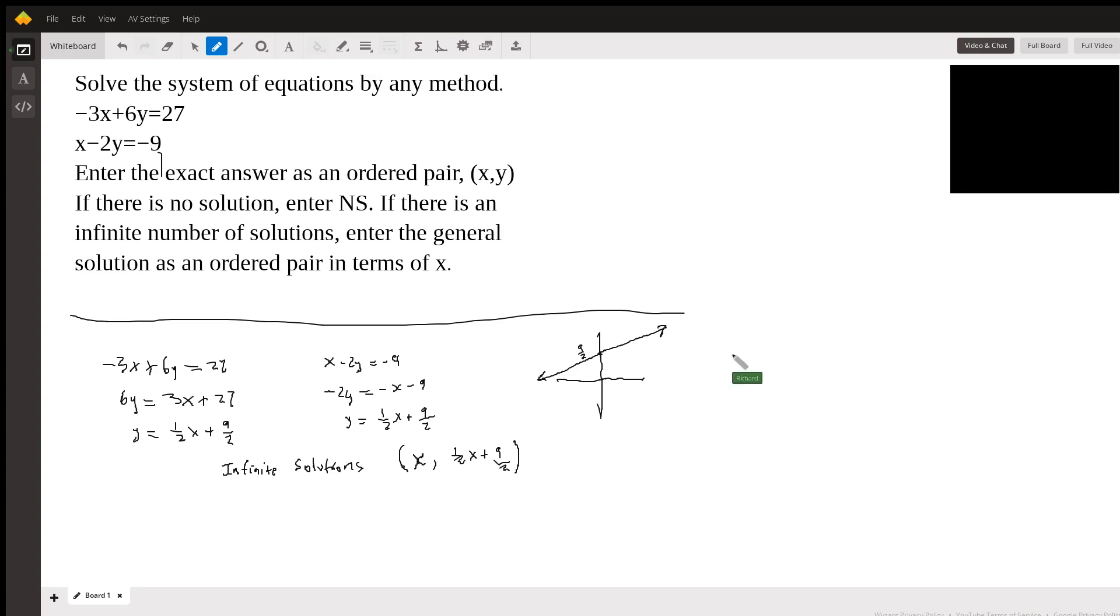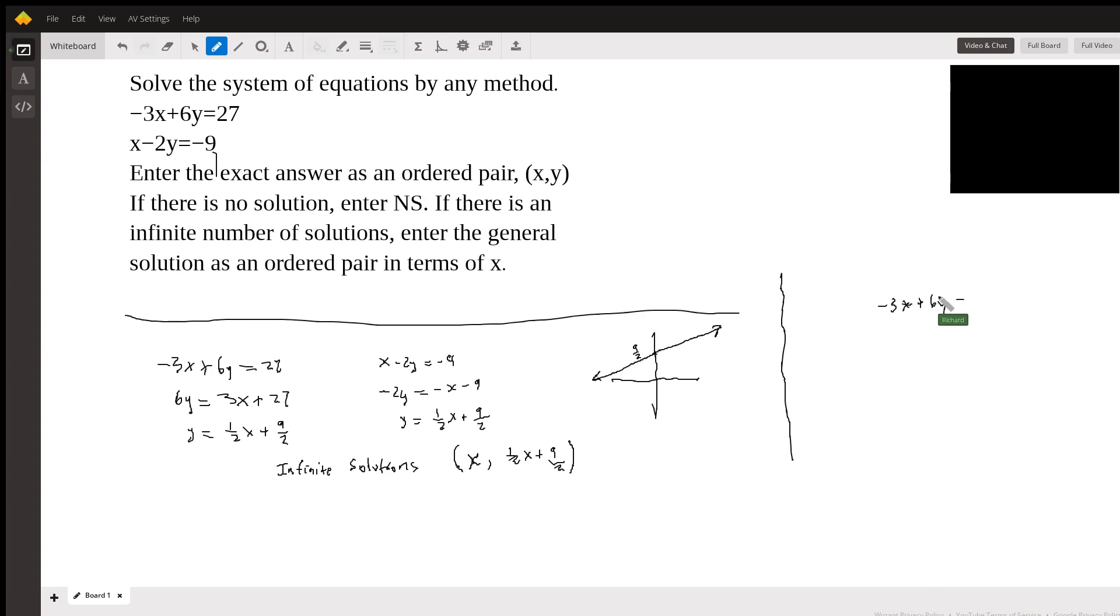Now you could have gone ahead and tried to solve. And that's another way to do it. I don't think it's as good, but I'll do it anyway. So let's suppose we left the top equation alone, negative three x plus six y equals 27.